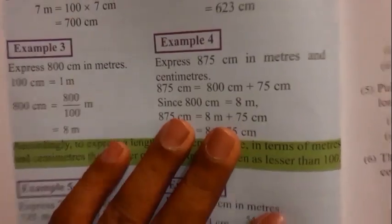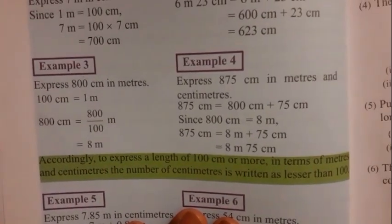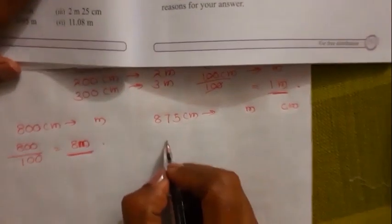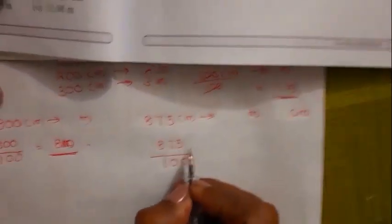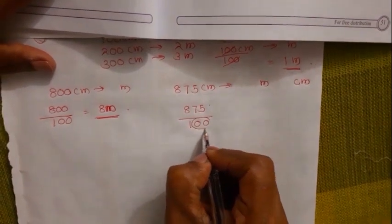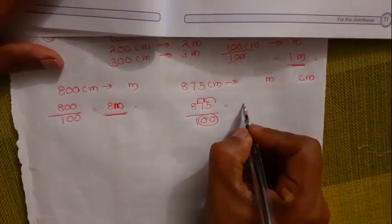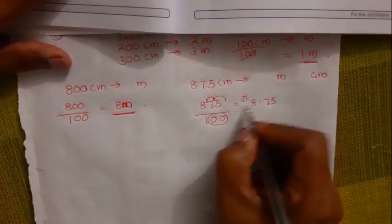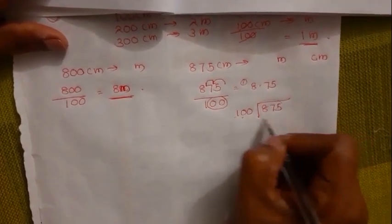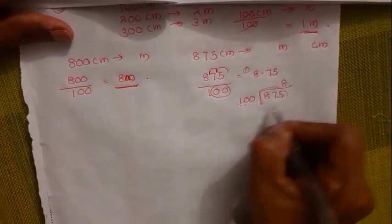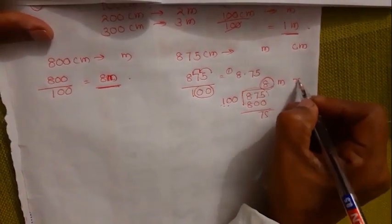Example 4: Express 875 centimeters in meters and centimeters. You divide 875 by 100. The easy method: jump the decimal point backwards two places — giving 8.75. This is Method 1. The second method is long division: 100 times 8 is 800, remainder 75. So the answer is 8 meters and 75 centimeters.